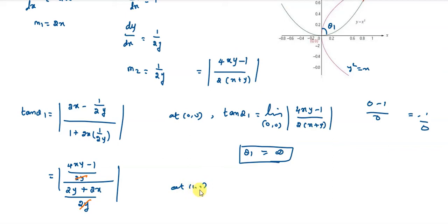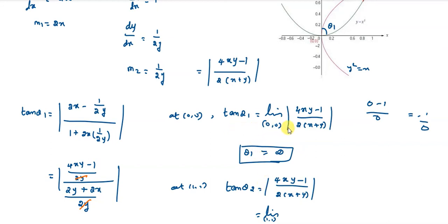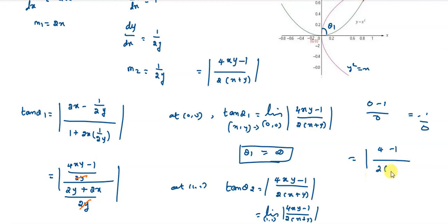Now replacing with the point (1,1) for theta 2: tan theta 2 equals the modulus of 4xy minus 1, the whole divided by 2 into x plus y. Substituting (1,1): this equals 4(1)(1) minus 1 divided by 2 into (1 plus 1), which equals 3 by 4. Therefore, theta 2 is equal to tan inverse of 3 by 4.